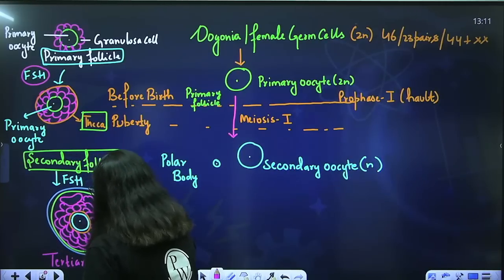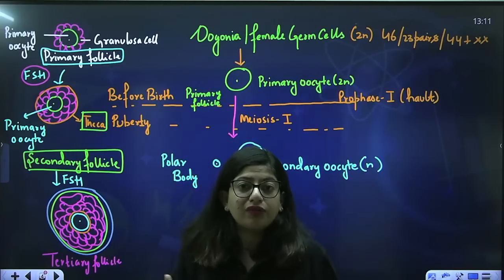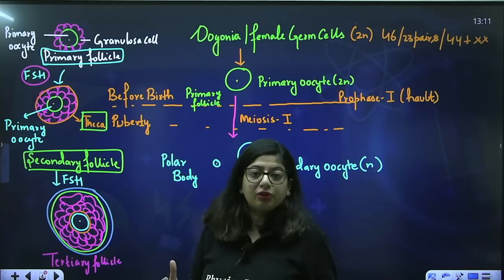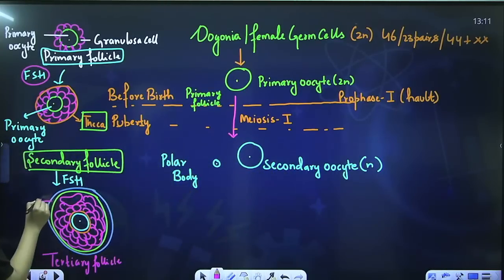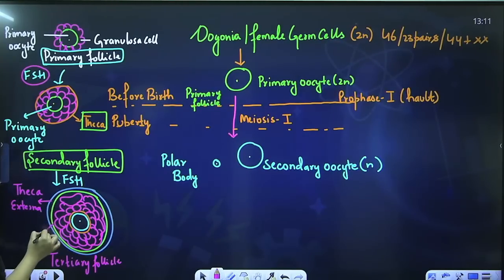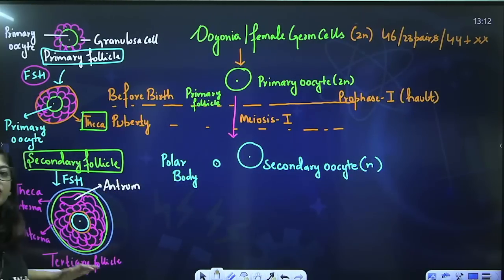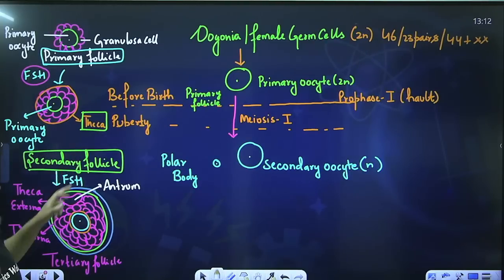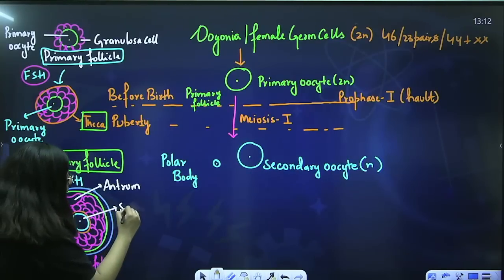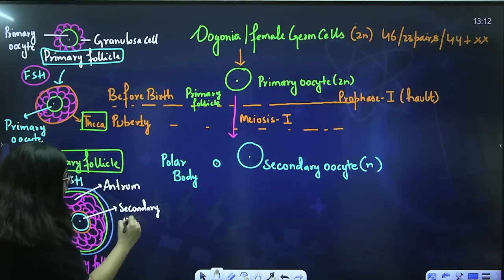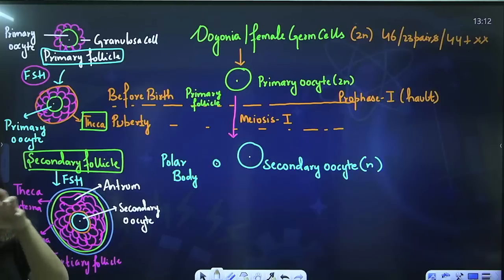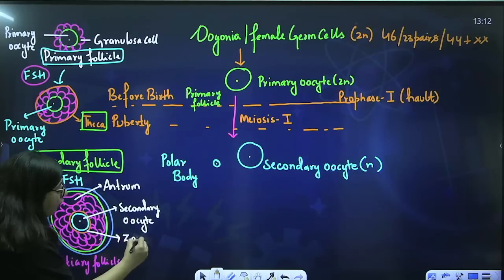The tertiary follicle has a lot of granulosa cells, a theca externa layer, a theca interna layer, and a cavity called the antrum. As soon as the tertiary follicle is formed from the secondary follicle, the primary oocyte present inside will get converted into the secondary oocyte.